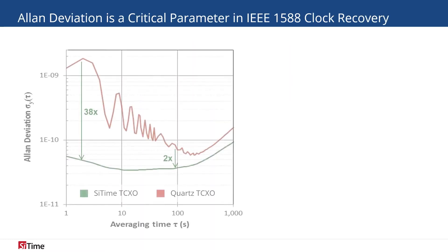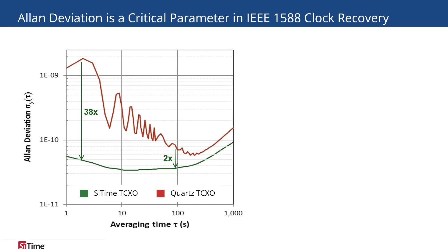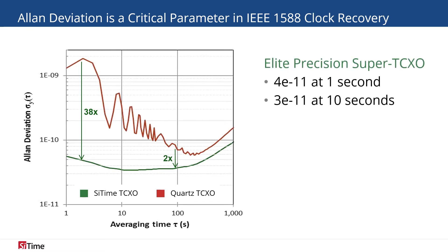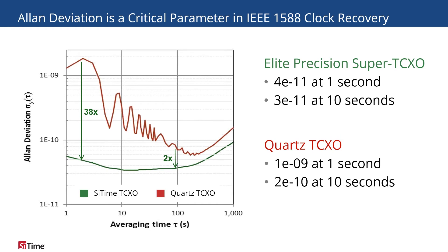Along with temperature slope, Allan deviation, or short-term time stability, is another critical parameter for IEEE 1588 clock recovery. Low Allan deviation ensures that the output is stable between timing packets. Sightime's TC-XO's Allan deviation under airflow is 4e-11 at 1 second and 3e-11 at 10 seconds. Similarly, the Allan deviation of the Elite TC-XO experiences minimal fluctuation during sudden changes in temperature. Elite's performance over the entire operating temperature range and under airflow makes designing the system easier for engineers, as our TC-XO can be placed anywhere on the board.